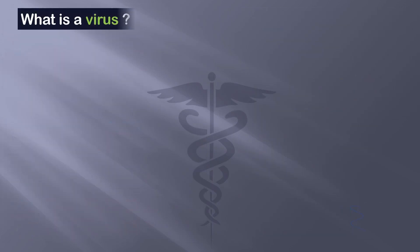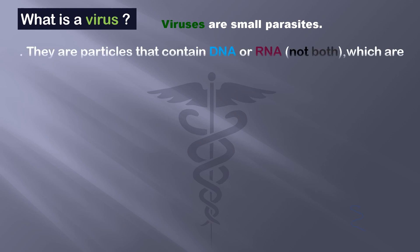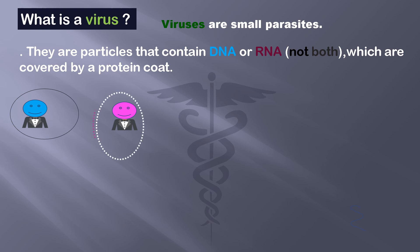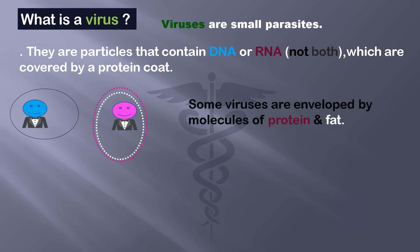What is a virus? They are small parasites. Parasites are organisms that live inside other organisms of a different species and derive nutrition from them. Viruses are particles that contain DNA or RNA but not both of them together. These particles are covered by a protein coat. Some viruses are enveloped by molecules of protein and fat.